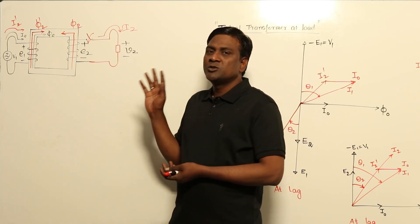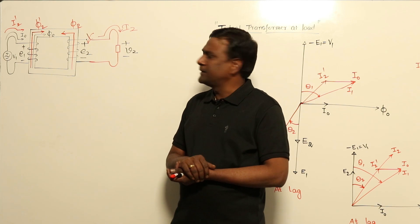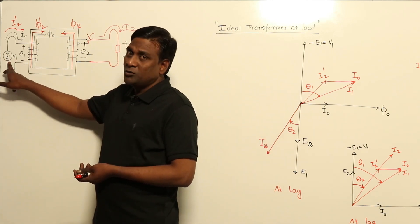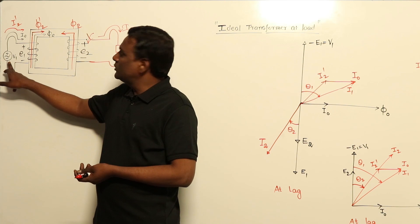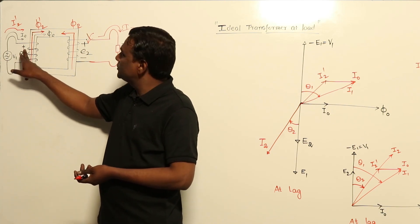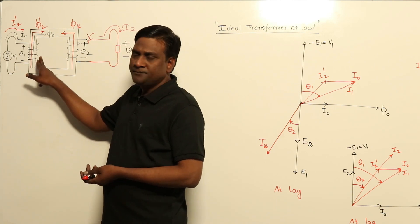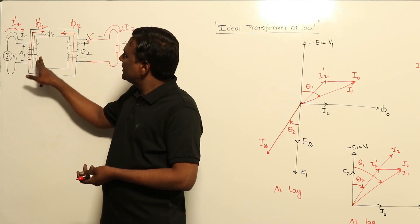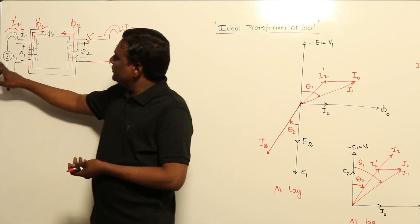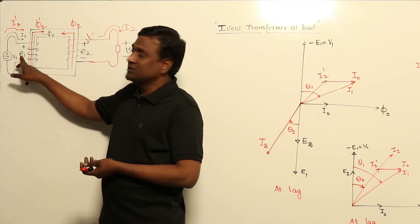For example, V1 is the supply voltage, and because of that E1 is produced. E1 is produced because of the no-load current flowing through the number of turns N1, and because of that the operating flux φ₀ will be produced. So if V1 is 100 volts, automatically E1 will become 100 volts RMS, and φ₀ will be produced.